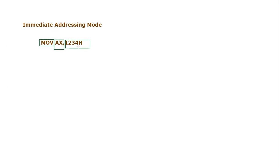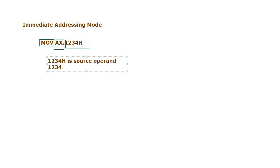So 1234h is an immediate value or immediate operand which is provided inside this instruction. What is going to happen is 1234h will go to AX. 1234h is a source operand because it is the value which is immediately provided. An immediate value can never be a destination value, so it is always a source operand. After the execution of this instruction, AX will equal 1234h. In this example we are considering a 16-bit immediate value.